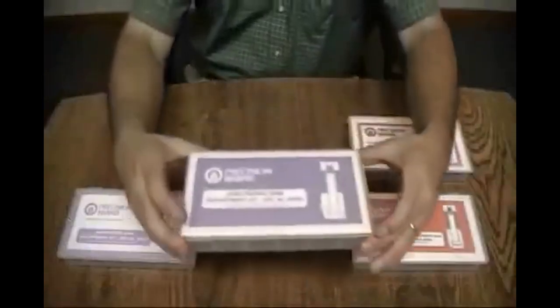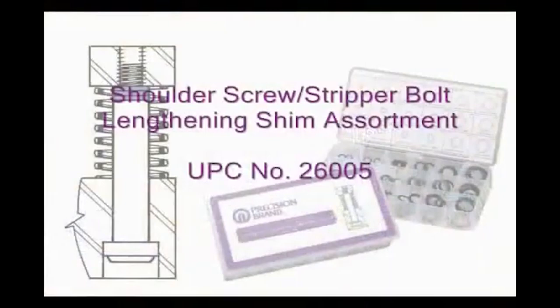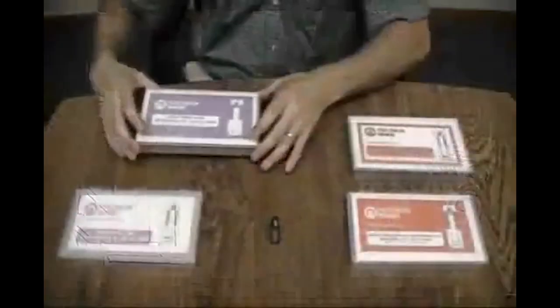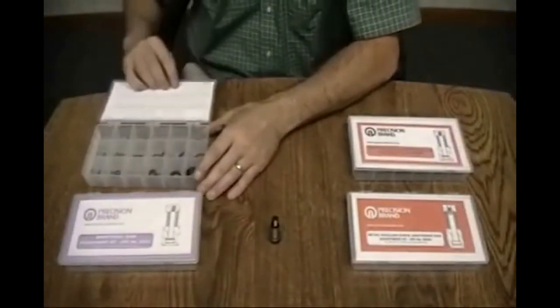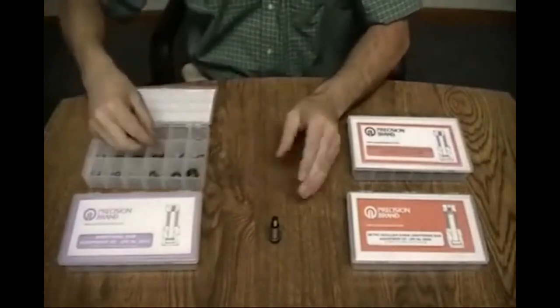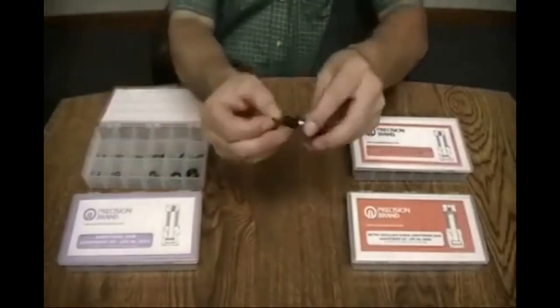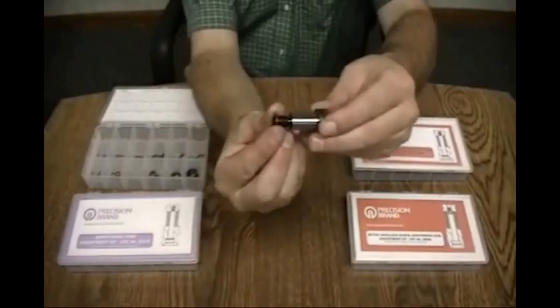Precision Brand also makes a style that works in the converse. If you need to make a shoulder screw that's a little longer than a standard length, again find the appropriate diameter size in whichever thickness you choose.